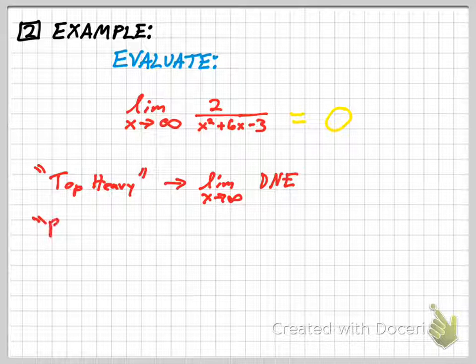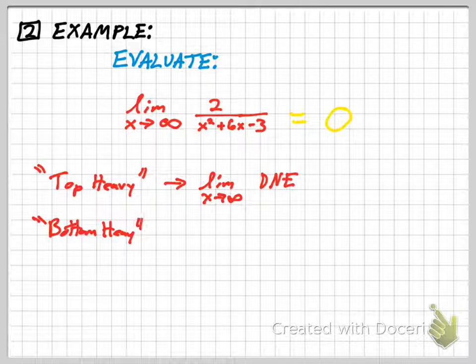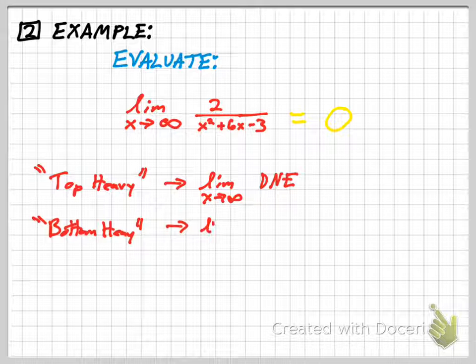If it's bottom-heavy, then the limit will always be 0.